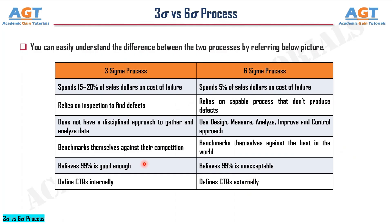We can easily understand the difference between the two processes by referring to this picture. A three sigma process spends 15 to 20% of sales dollars on cost of failure, whereas a six sigma process spends only 5%. A three sigma process relies on inspection to find defects, whereas six sigma relies on capable processes that don't produce defects. A three sigma process does not have a disciplined approach to gather and analyze data, whereas six sigma uses a design, measure, analyze, improve, and control approach. A three sigma process benchmarks itself against its competition, whereas six sigma benchmarks against the best in the world. A three sigma process believes 99% is good enough, whereas six sigma believes 99% is unacceptable. A three sigma process defines CTQs internally, whereas six sigma defines CTQs externally.